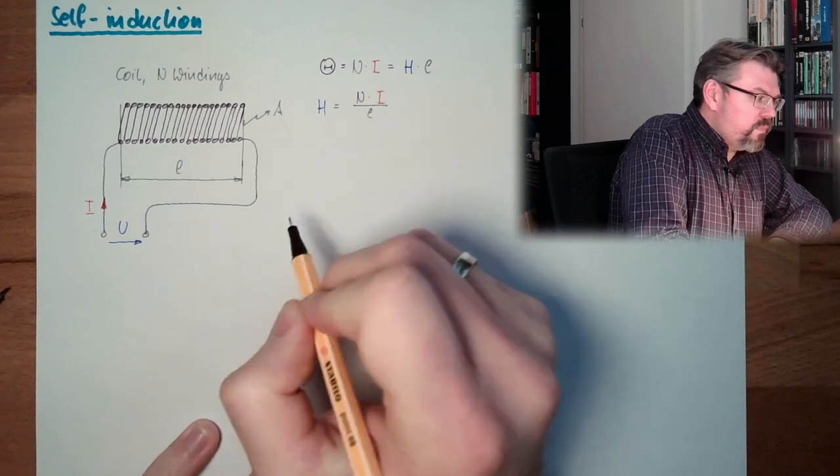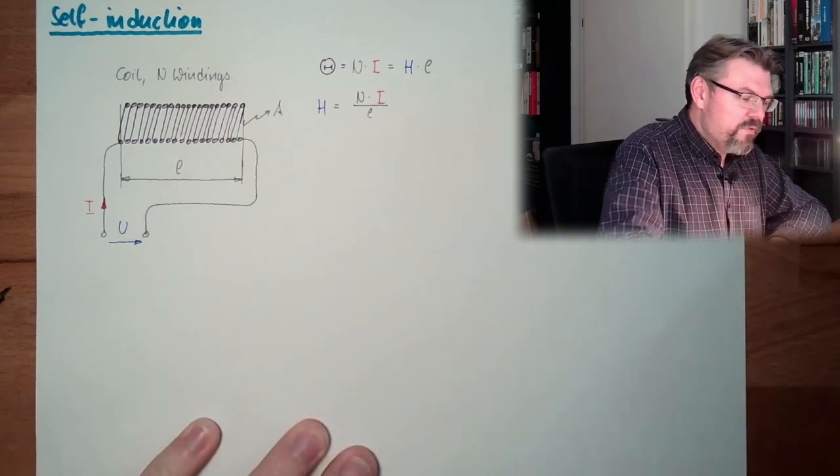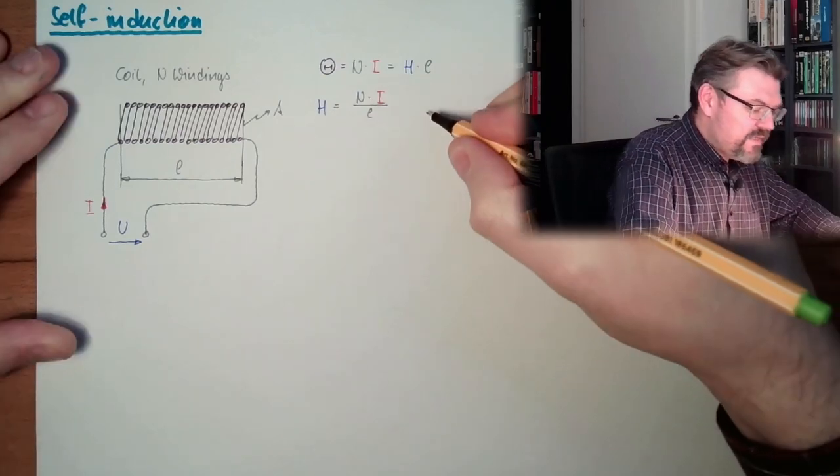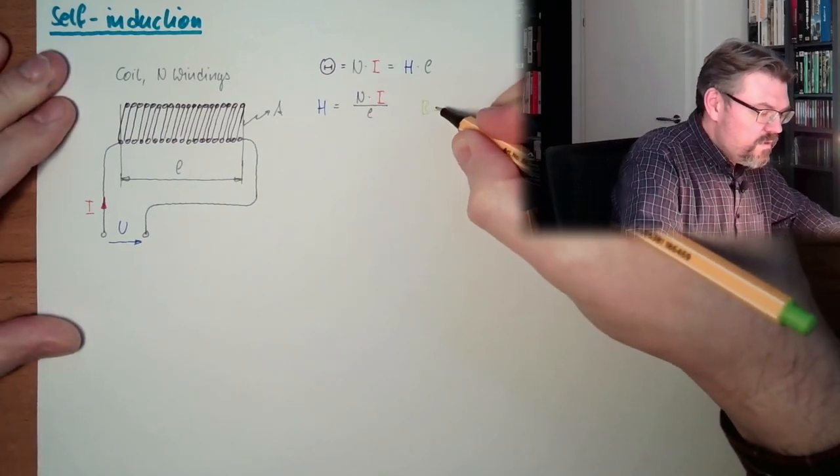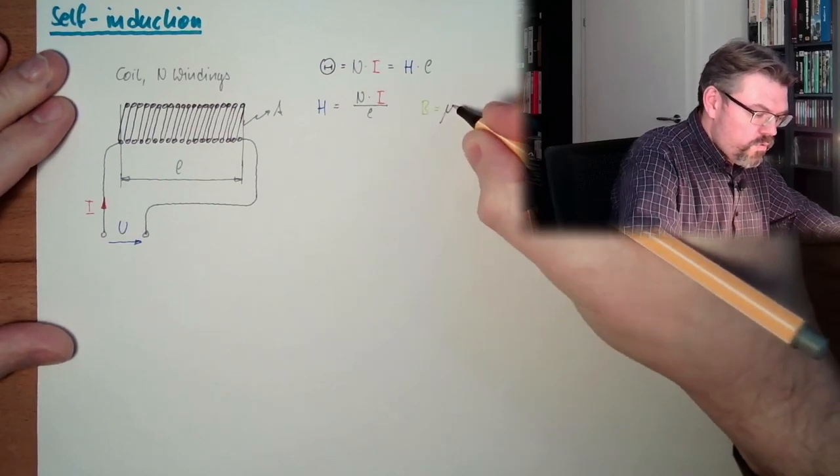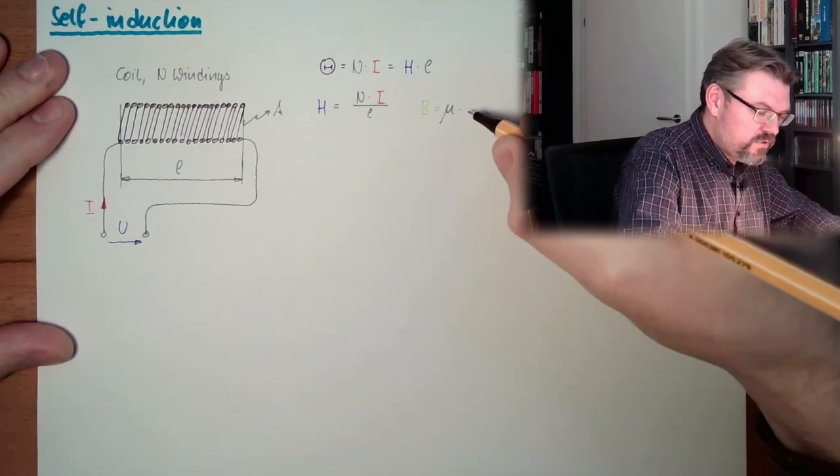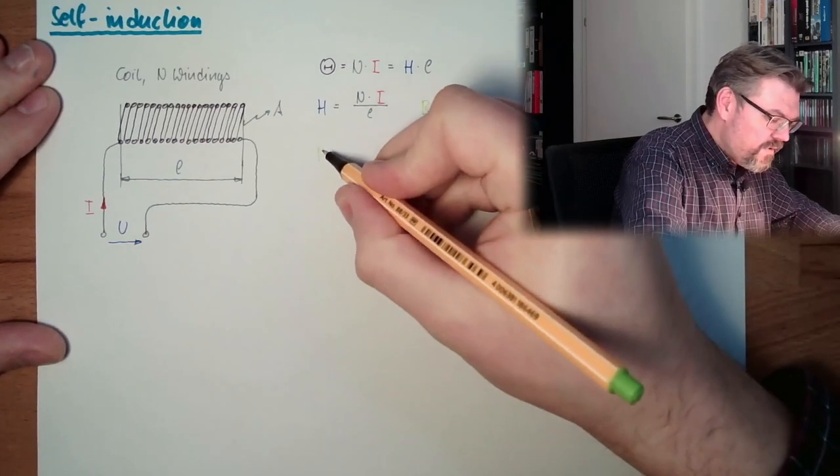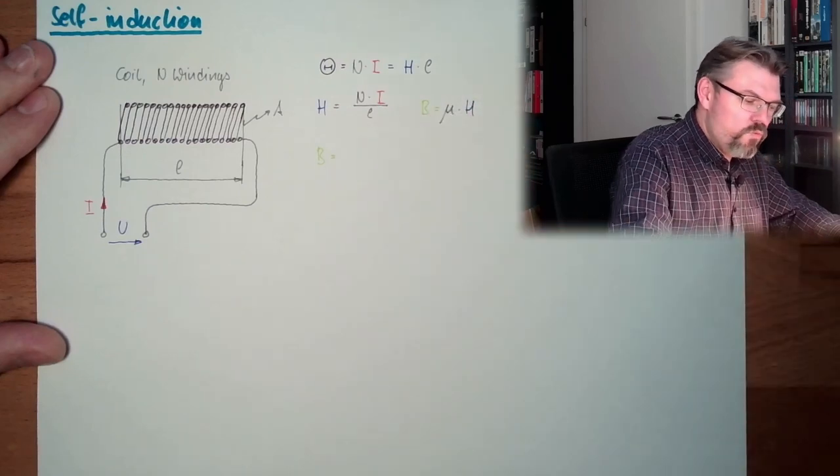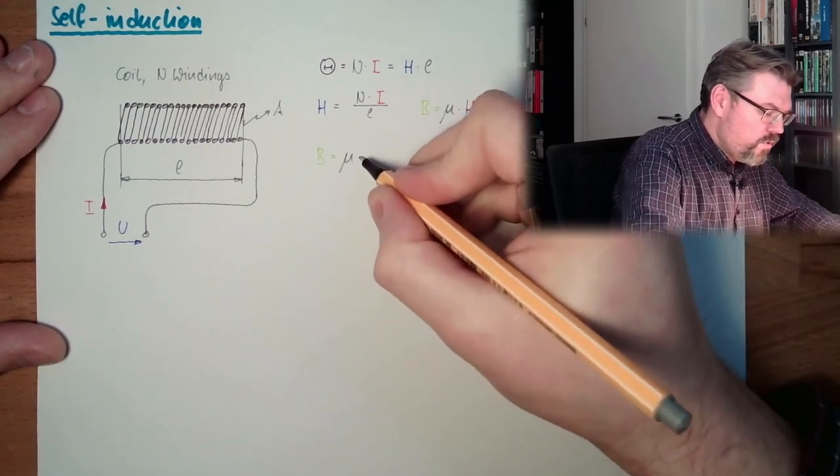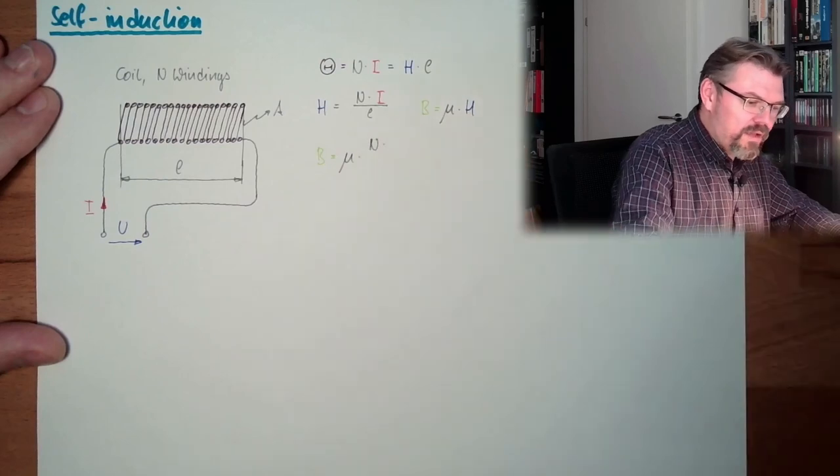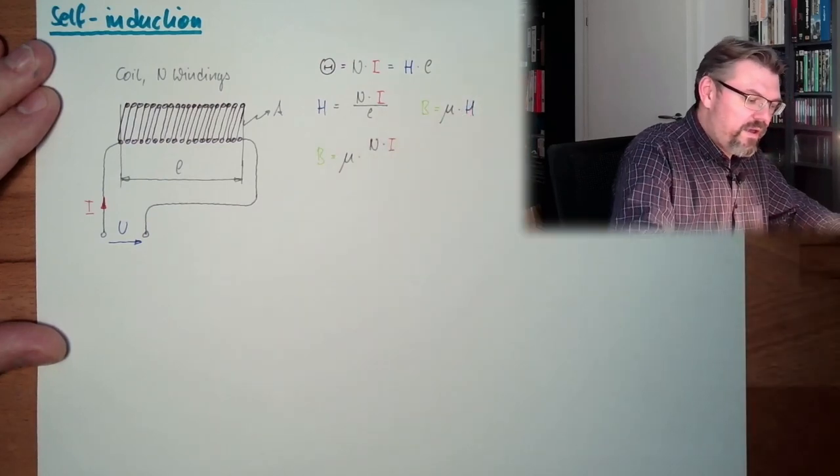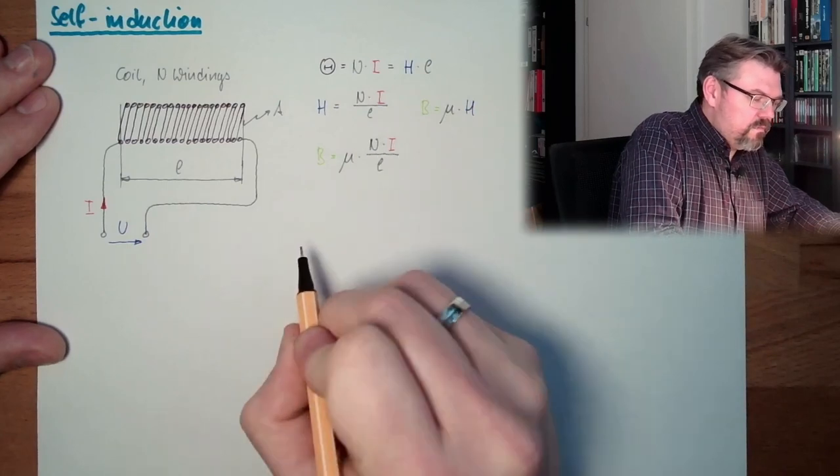So, our H here equals N times I divided by L. Just get the L to the other side. And we know our magnetic flux density B equals μ multiplied by H.